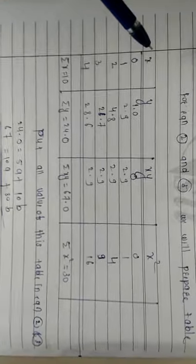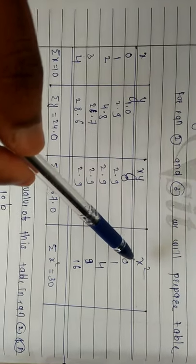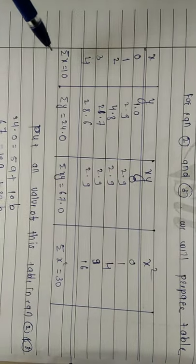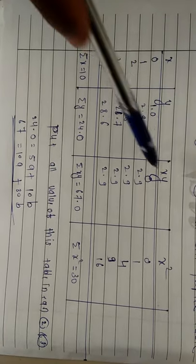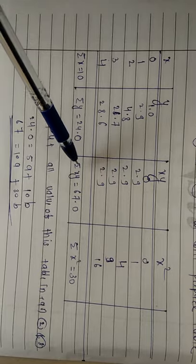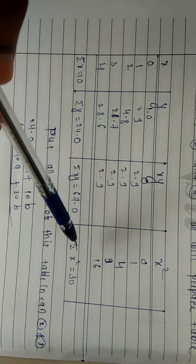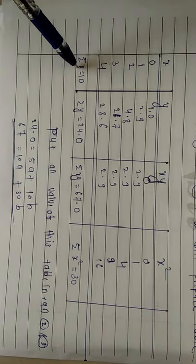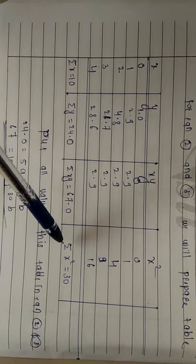The table has the following columns: the value of x, the value of y, the product xy and its summation, and x squared and its summation. Take the summation of x, the summation of y, do the multiplication xy and find its summation, and square the x values to get x squared and find its summation.